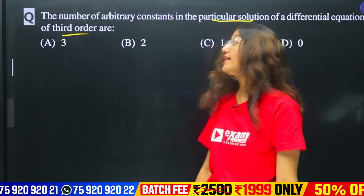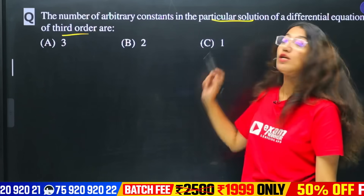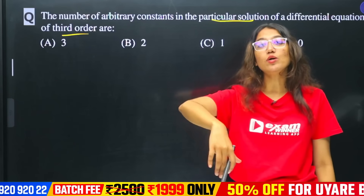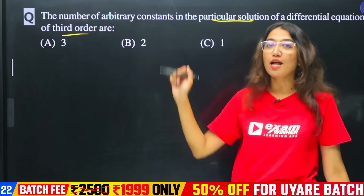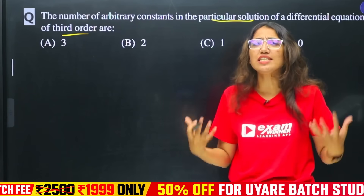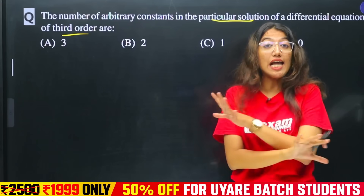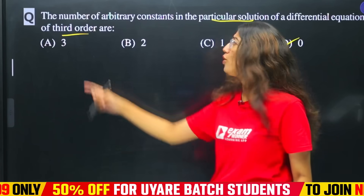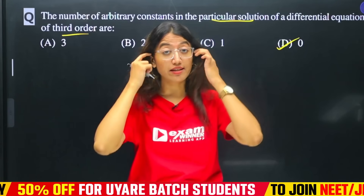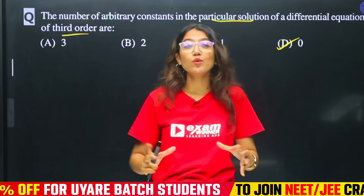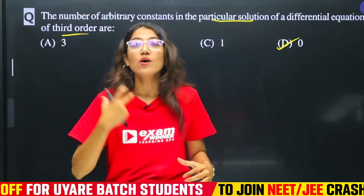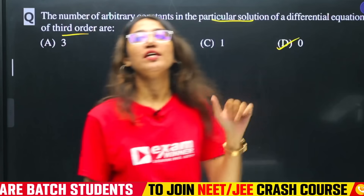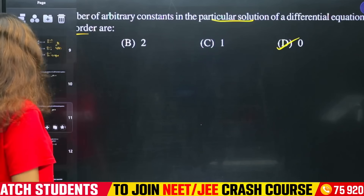What is the solution? If it is the particular solution, what are the arbitrary constants? There are none — zero. The number of arbitrary constants in a particular solution is zero, because values have been given to them. So if the order is 3, the general solution has 3 arbitrary constants, but the particular solution has zero.